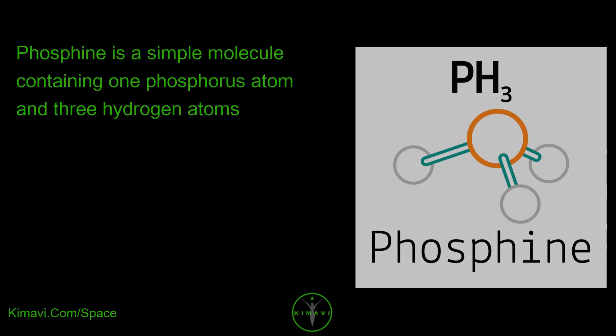Phosphine is a simple molecule containing one phosphorus atom and three hydrogen atoms.